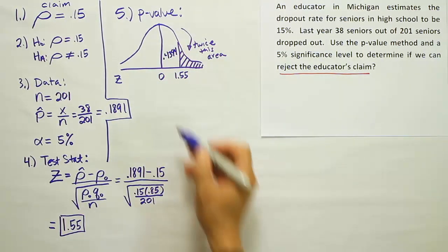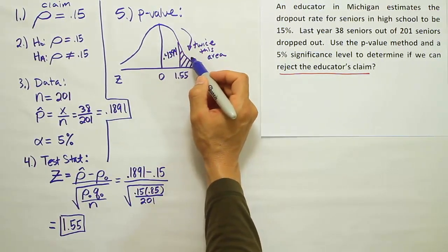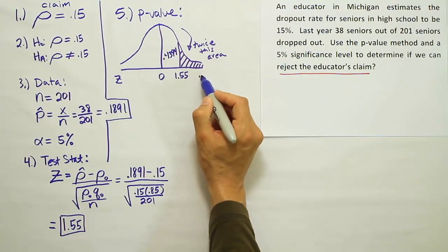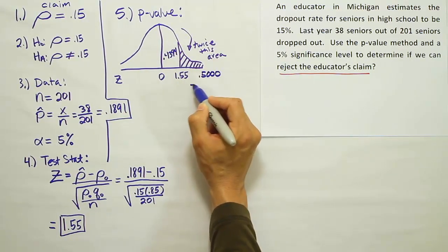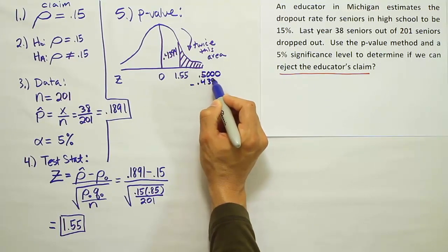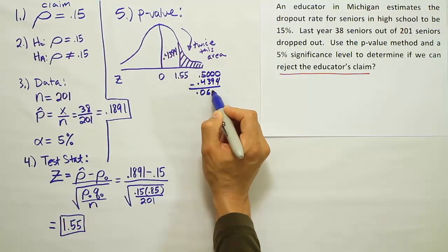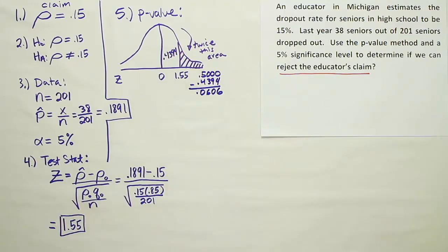Okay, so we get the answer 0.4394 from the z-table. Now that value is not the value we're looking for. We have to get the area in the tail, so we're going to do 0.5 minus that value. So we're going to do 0.5000 minus 0.4394. And when we do that, we'll get 0.0606.